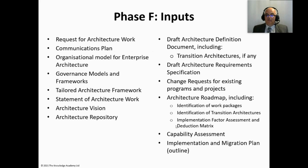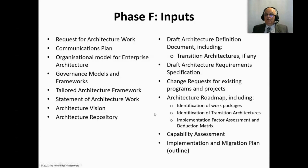Inputs into Phase F include all the usual suspects, including the architecture roadmap and the implementation migration plan — and despite just saying architecture roadmap, that is also an outline version along with the implementation migration plan, which are the major outputs from Phase E. The request for architecture work is still seen as an input into Phase F, as it was in Phases E, D, C, B, and A, although here it is more of a referential input.